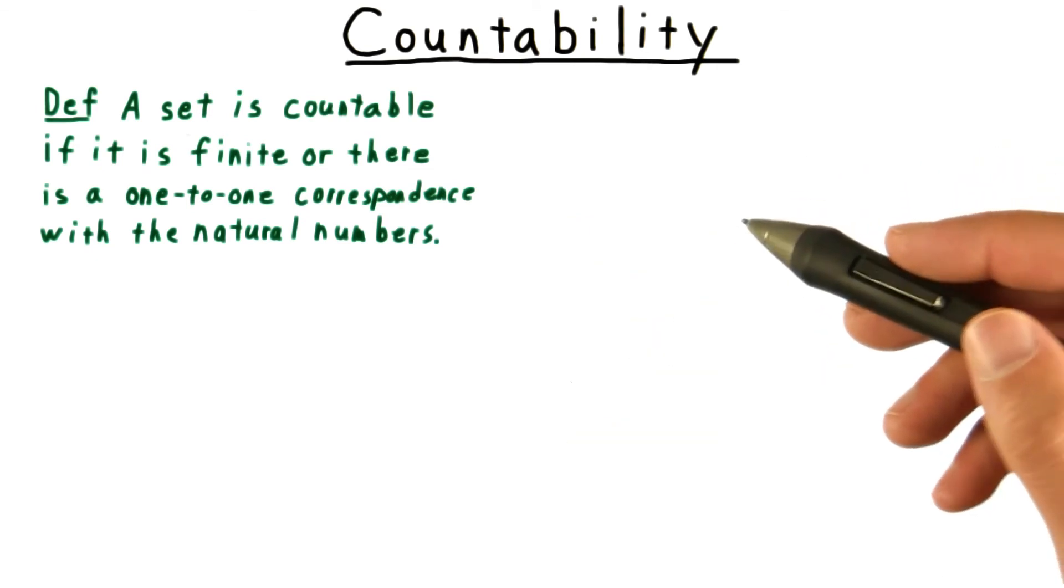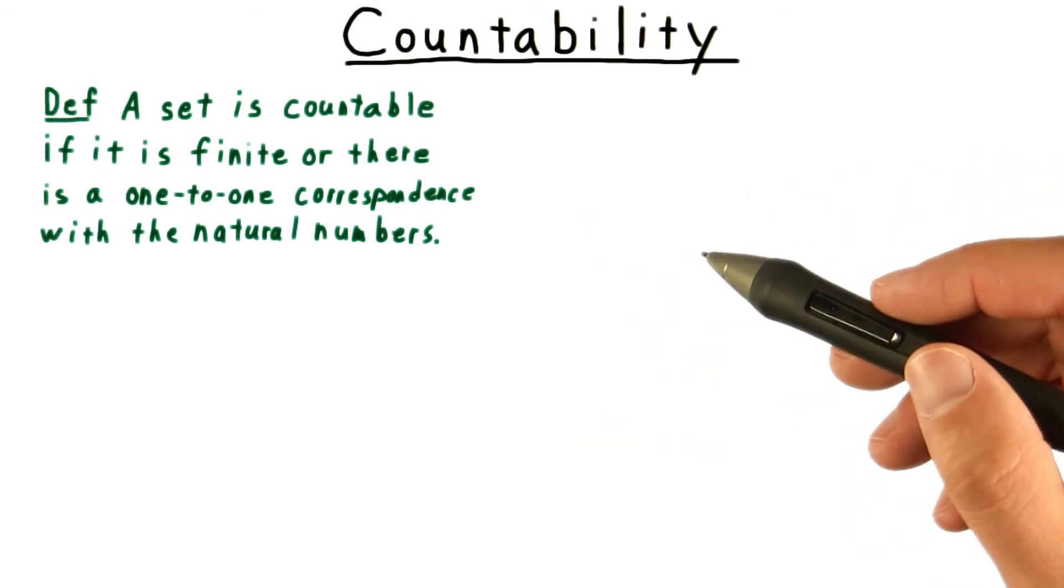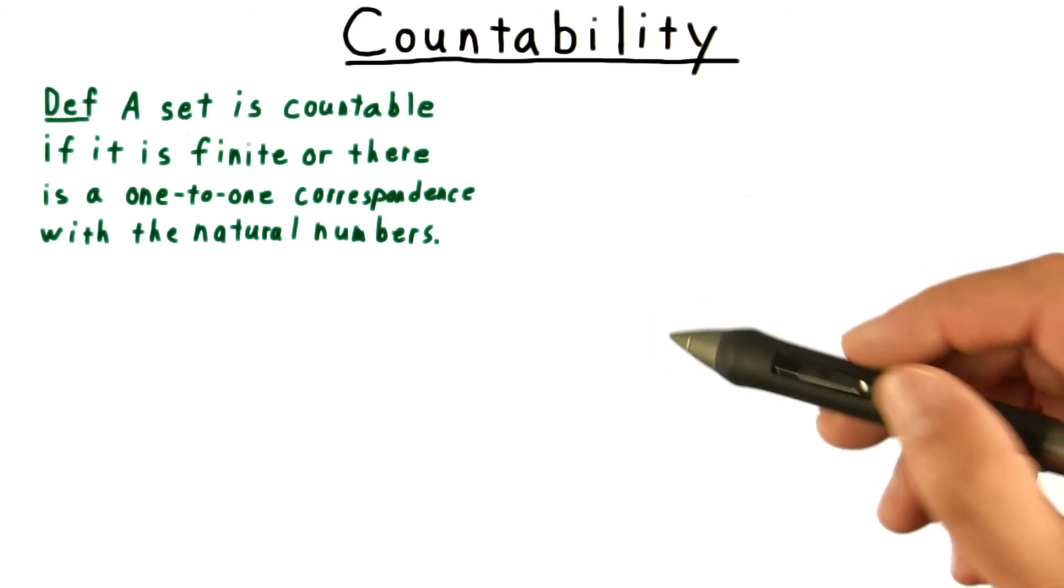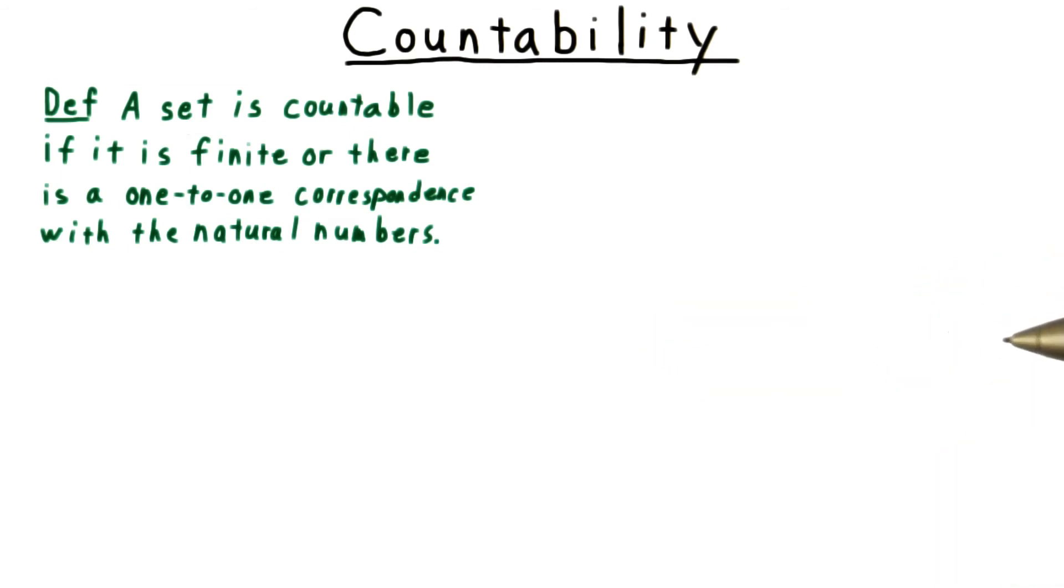A one-to-one correspondence, by the way, is a function that is one-to-one, meaning that no two elements of the domain get mapped to the same element of the range, and also onto, meaning that every element of the range is mapped to by an element of the domain.